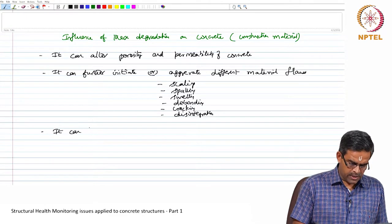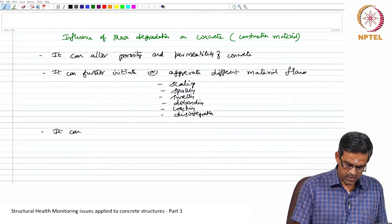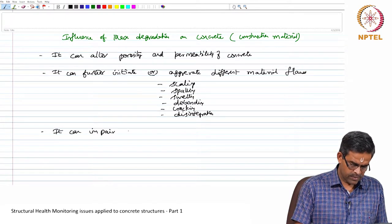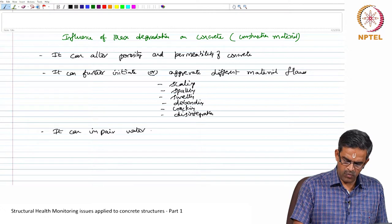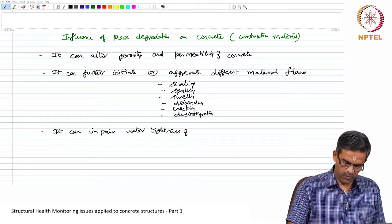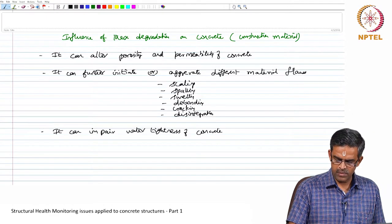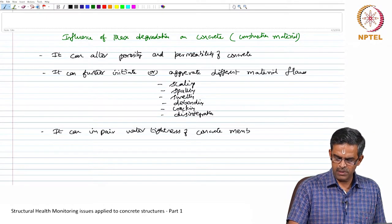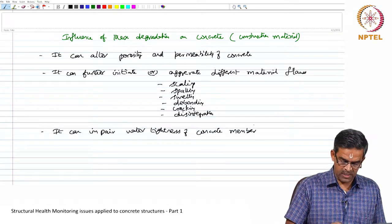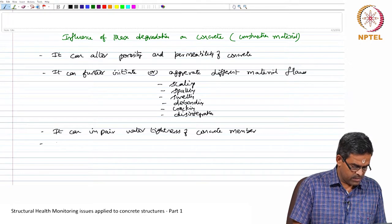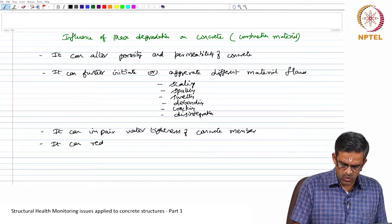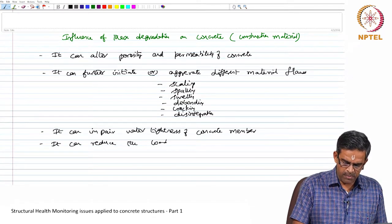These degradations can also cause impairment in water tightness of concrete members, especially reservoir structures and dams. In fact, overhead tanks can also be affected very severely by this condition. It can ultimately reduce the load carrying capacity of the member.